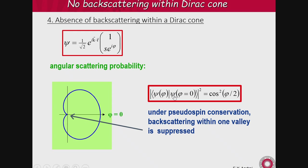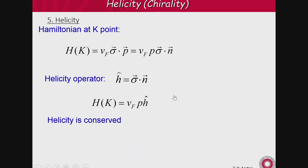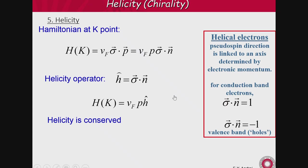Number five: helicity. The Hamiltonian can be written as V_F σ·p = V_F |p|(σ·n̂), which is the helicity operator — the projection of the pseudo-spin onto the direction of the momentum. It's called helicity when mass is zero, and chirality when you have a finite mass. Because helicity commutes with the Hamiltonian, it's a good quantum number and a conserved quantity. In the conduction band helicity is +1, in the valence band it's −1.